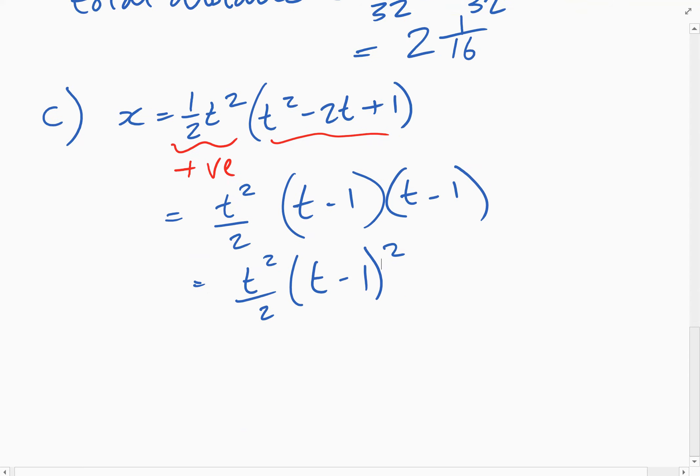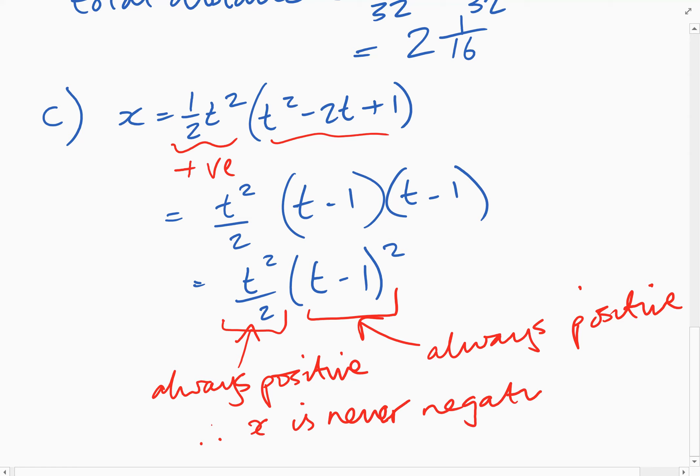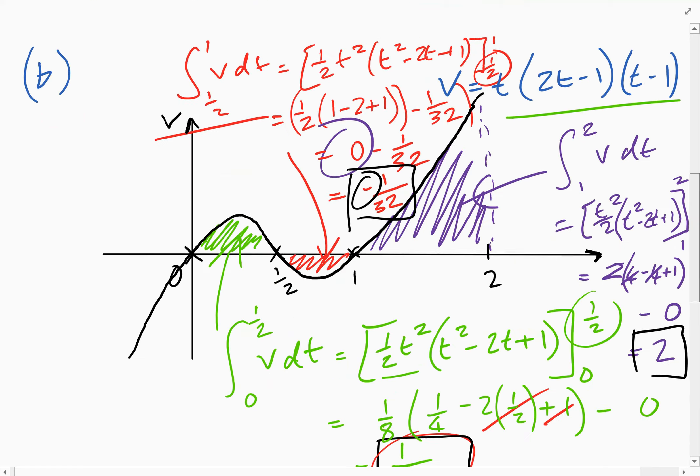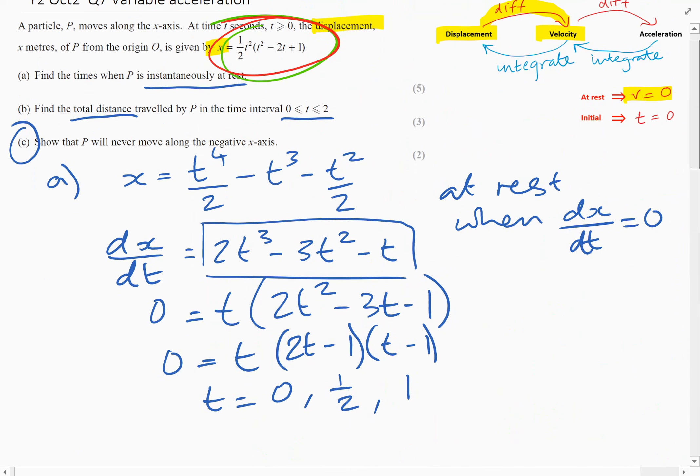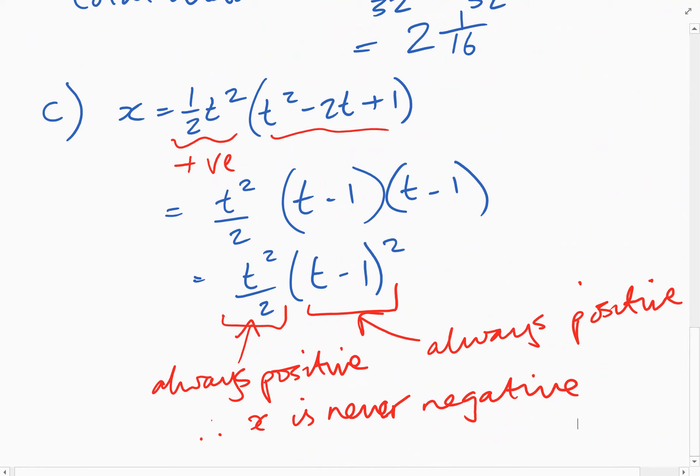So that's helpful because whatever value of T we get, when you square it, it's going to be positive. Or when you subtract 1 and then square it, it's still going to be positive. So this is always positive because of T squared. But because you're squaring this as well, this would always be positive too. So this is always positive too. So therefore, you can say that X is never negative, which I think will be fine to get the two marks. So X can never be negative.